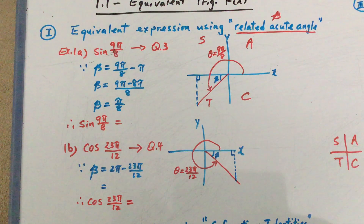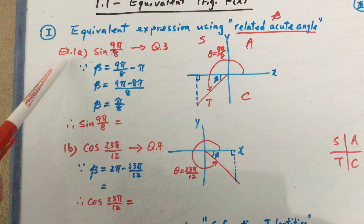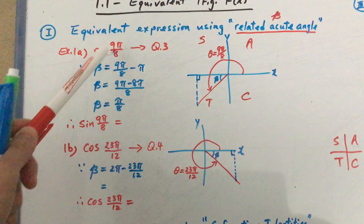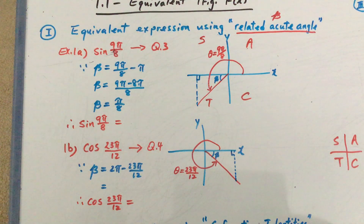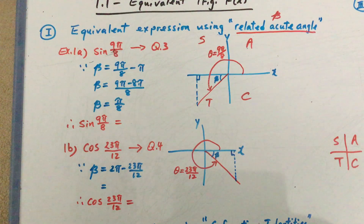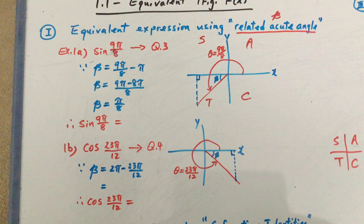If you have your handout with you, I want you to take a look at Example number 1. So Example 1a, where we have a sine of 9π over 8. If you can quickly work this out from your calculator — I understand that not everybody would be able to tell how big the angle 9π over 8 is.